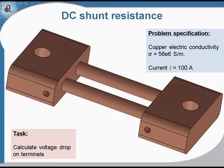Our task is to calculate the voltage drop so we can calibrate the voltmeter. The shunt is made of copper and it is designed to carry a current of 100 amperes.